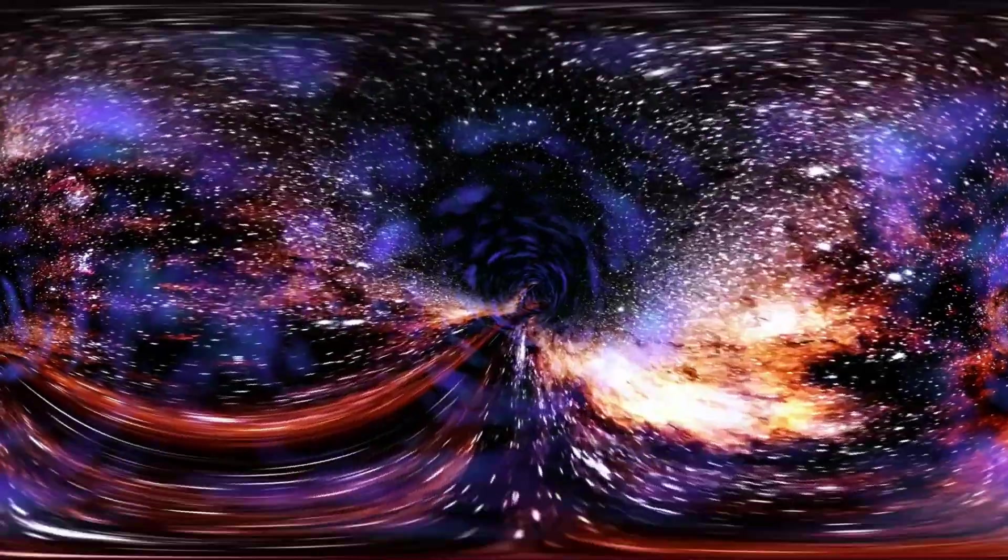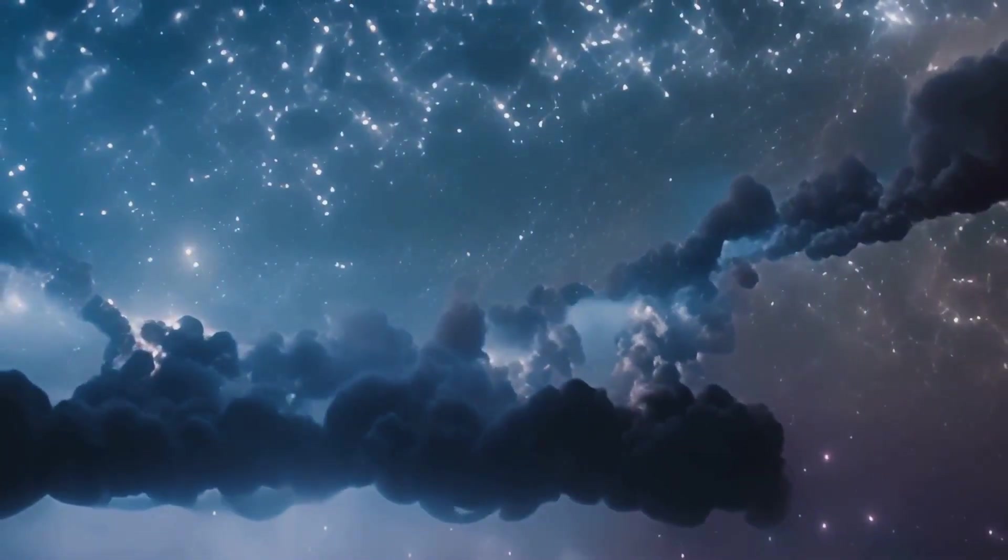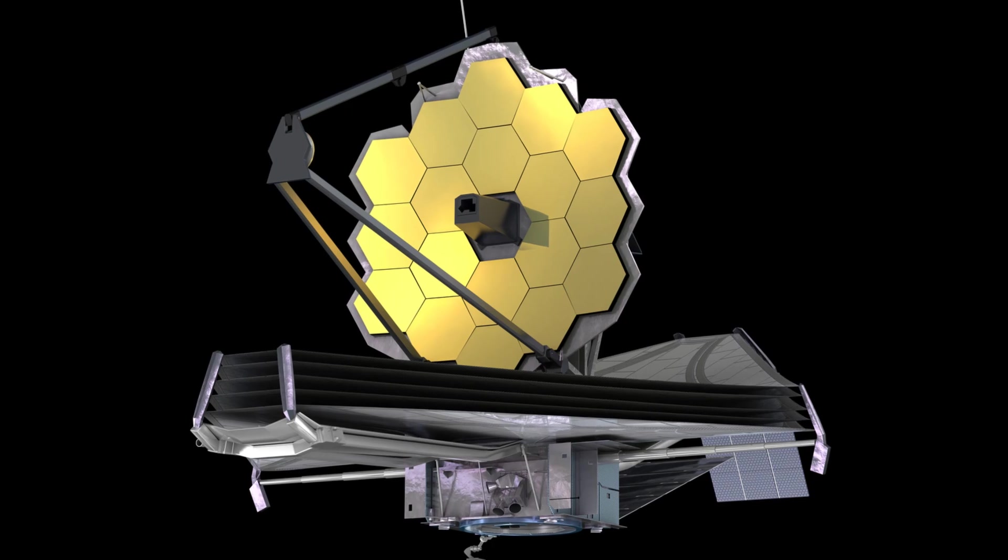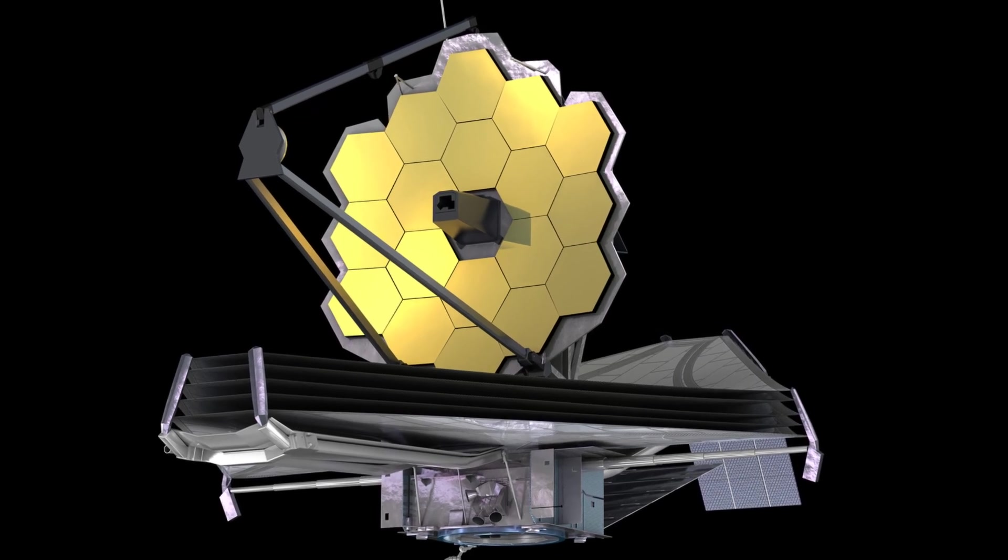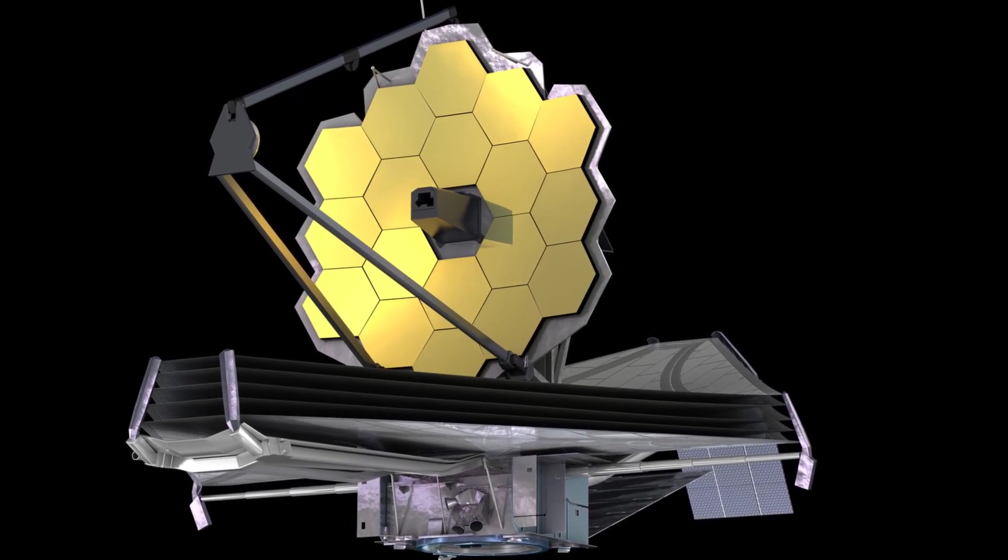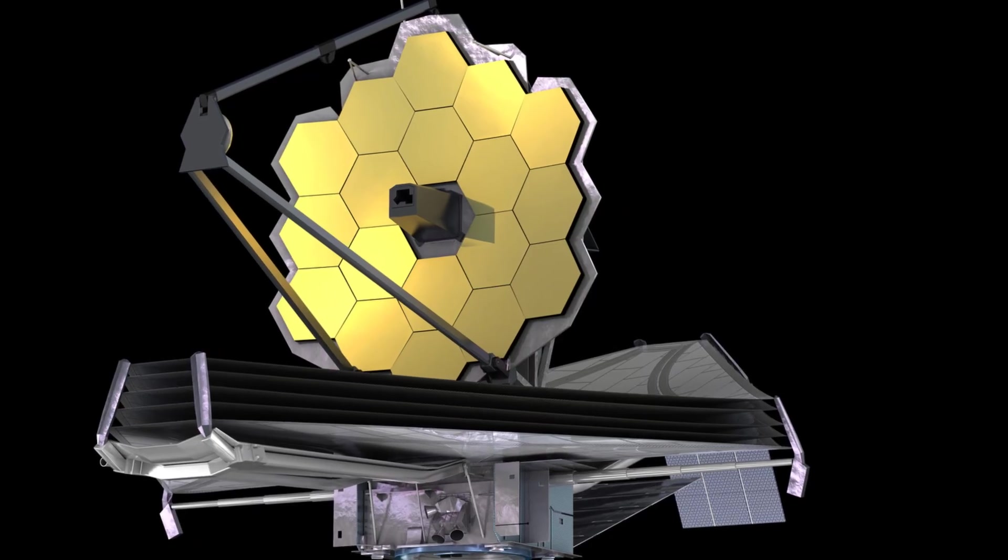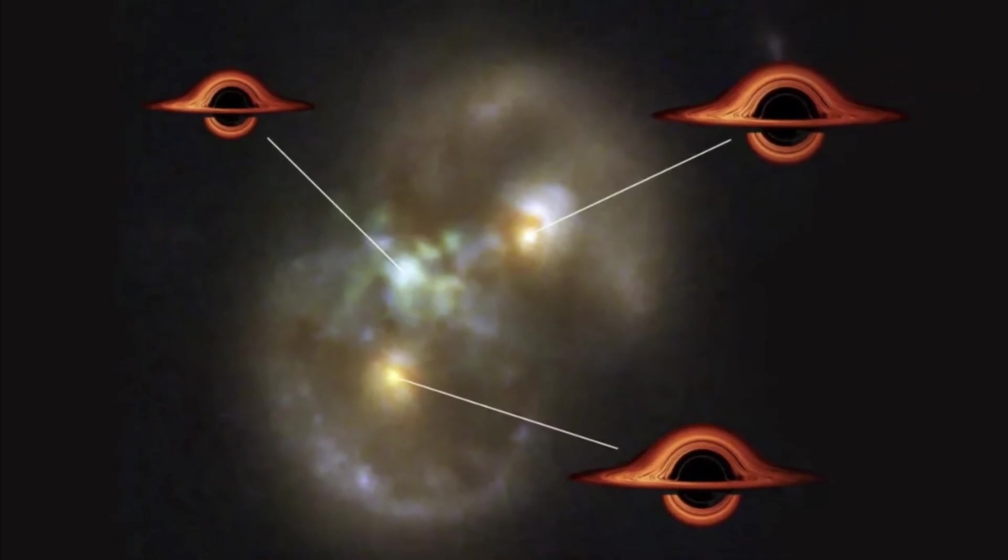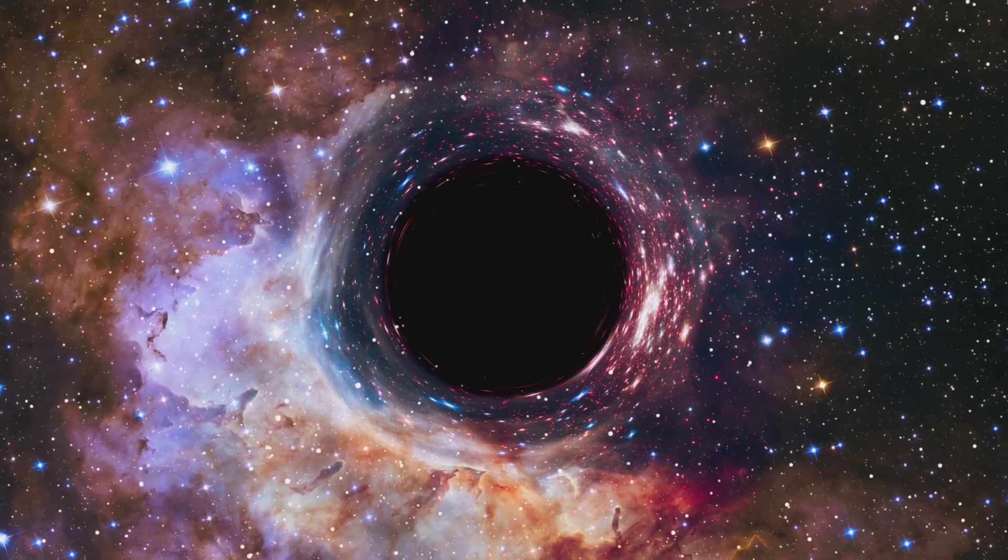It's a cosmic time machine, showing us the universe as it was at the dawn of time. When astronomers zoomed in on the infinity galaxy, they found a supermassive black hole right between the two merging galaxies, not at their centers. This is incredibly rare.